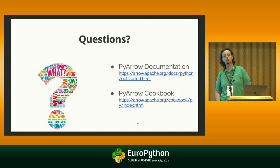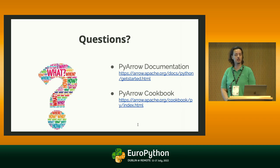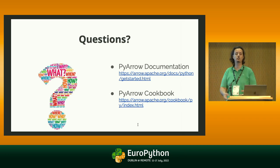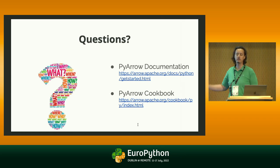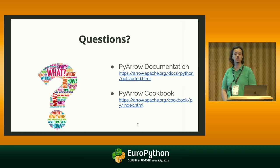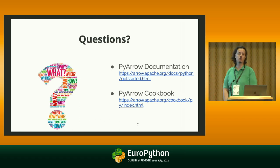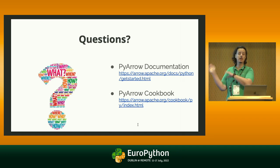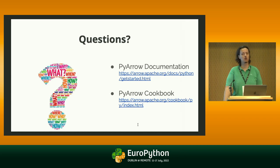I tried to give you an overall idea of what Arrow is about and what it can do for you, especially the PyArrow library, which is the Python access to the Arrow world. If you want to know more, you can look at the documentation, especially the getting started section which will give you a quick introduction to PyArrow. You can also look at the PyArrow cookbook, which is a fairly complete set of examples that you can just copy and paste into your code to do the operations you are looking for.